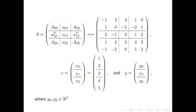In this video, we again talk about partitioning matrices and vectors and how it relates to matrix-vector multiplication. We're going to dive straight into an example. Consider the given 5 by 5 matrix A and vectors x and y, each of size 5.